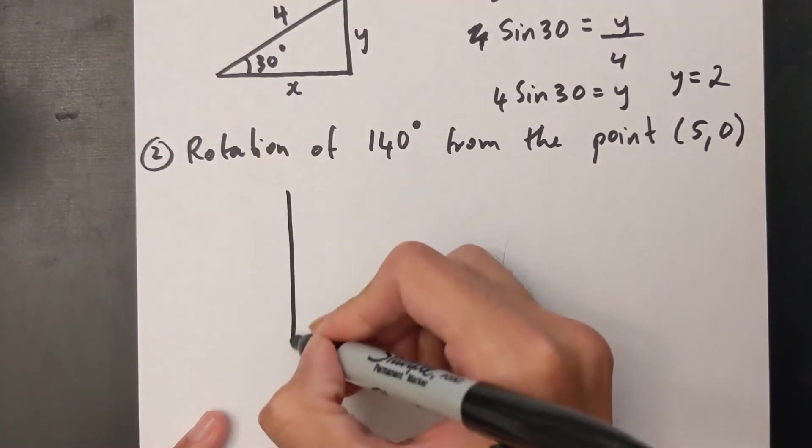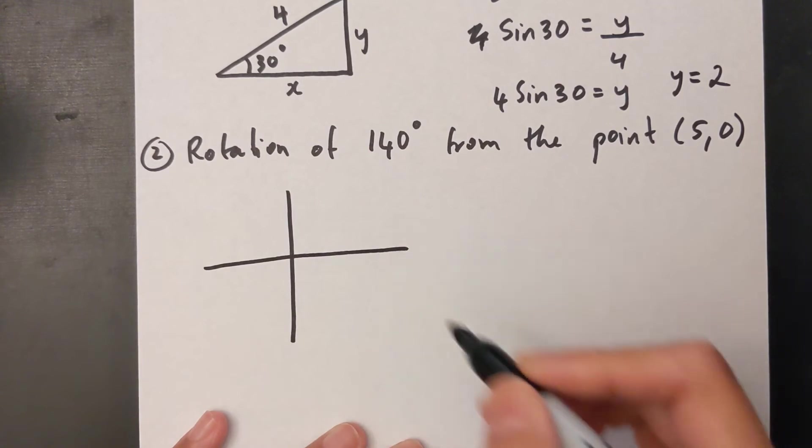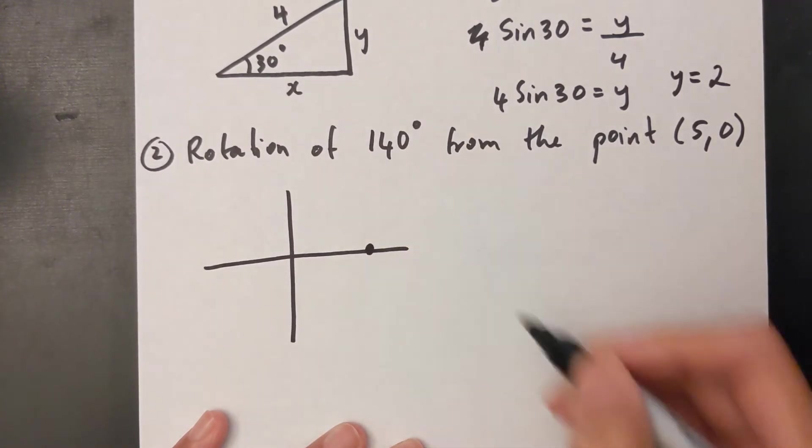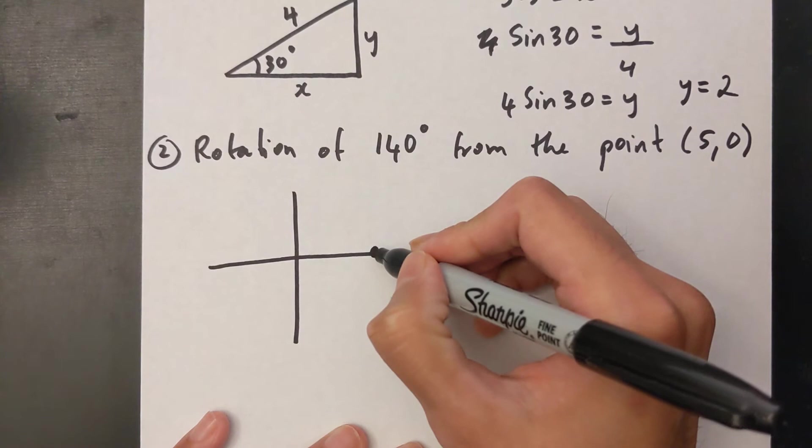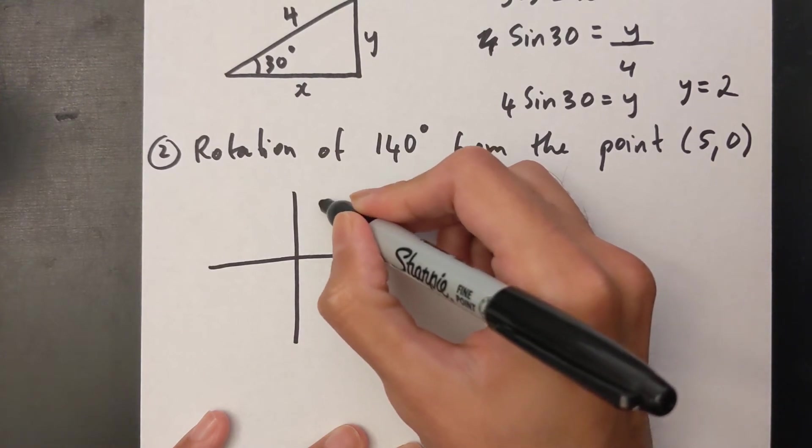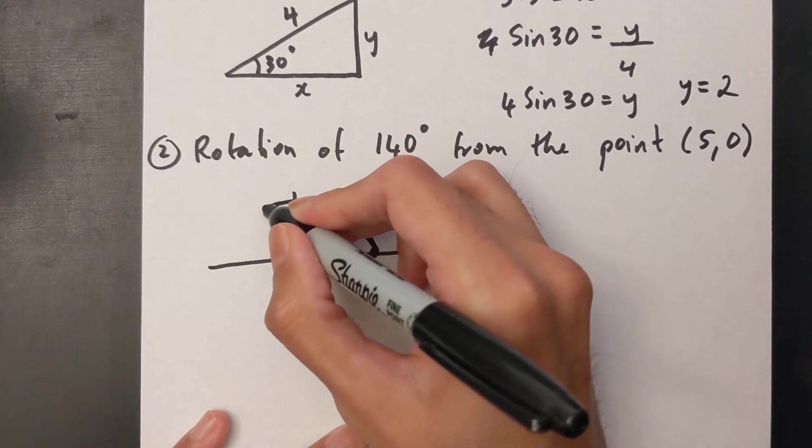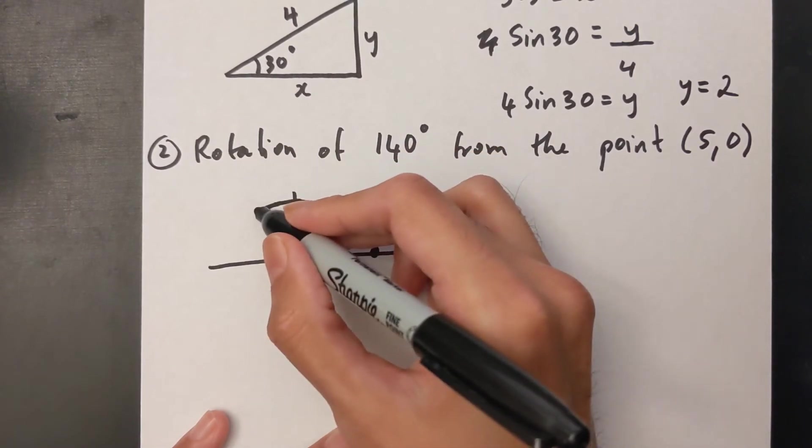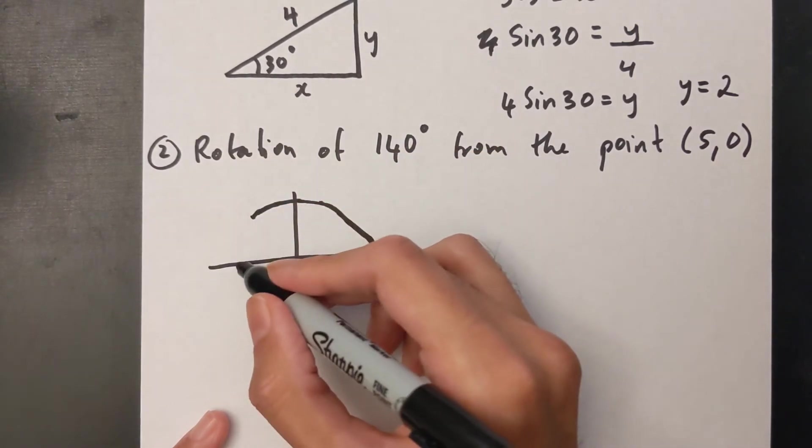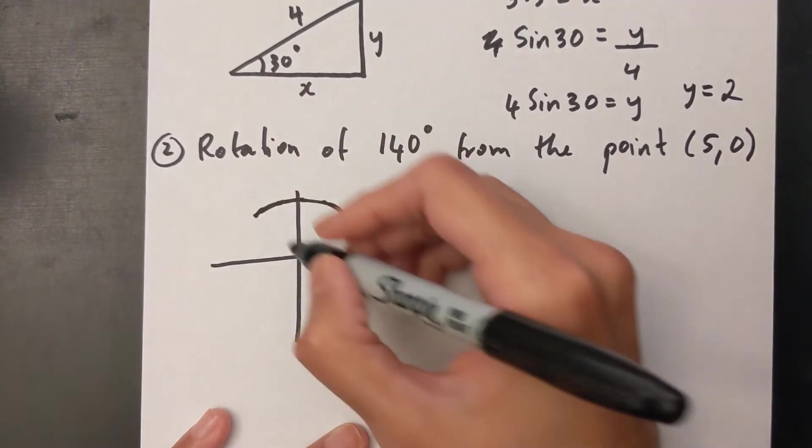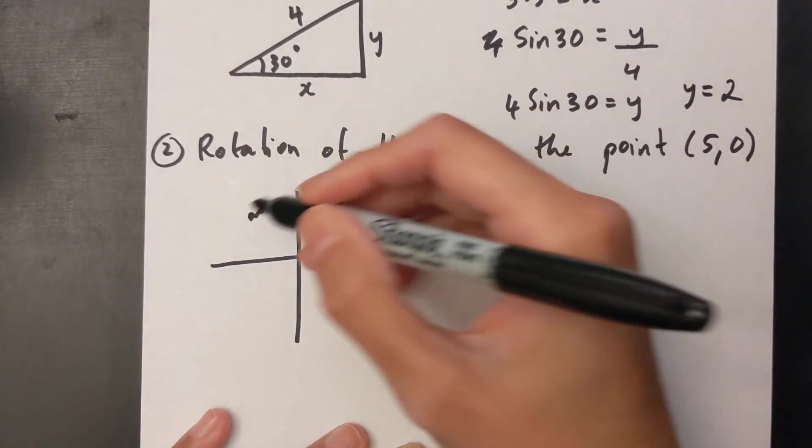So again let me draw it out on my axis first. (5,0) is approximately over here. Now if I do this rotation—that's a really bad circle but you get the idea—so this is 90 and somewhere over here is 140. By the time you reach this line it's 180, so 140 is approximately over here.